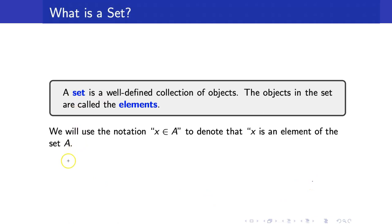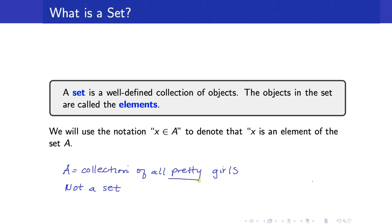For example, if A is the collection of all pretty girls, this is not a set because 'pretty girls' is not well-defined — we cannot really say whether a girl is an element of that set. However, if we change it to the collection of all girls with height of at least 5 feet 4 inches, then that will be a set because we can definitely tell whether a girl belongs to that set or not.